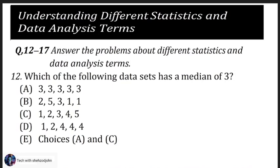Understanding different statistics and data analysis terms. Questions 12 to 17: answer the problems about different statistics and data analysis terms. Here we will give some questions and their answers to understand different statistics. Question 12: which of the following data sets has a median of three? Choice A: three, three, three, three, three. Choice B: two, five, three, one, one. Choice C: one, two, three, four, five. Choice D: one, two, four, four, four.